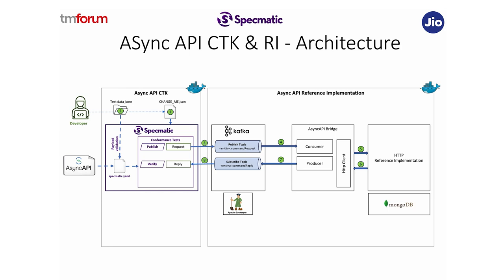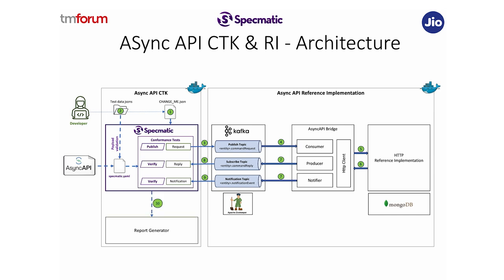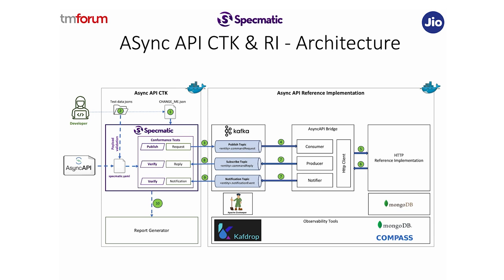Specmatic pulls the message from the command reply topic and verifies it against the Async API specification to make sure the reply matches the schema. The client is also capable of publishing notifications on the notification topic, which can also be verified by Specmatic. When all of this is done for all topics, we generate a report. While all of this is running, you may want observability into what is going on, so we've built a set of tools as part of the reference implementation for observability — for example, Kafdrop to see what's going on on Kafka. That is the high-level implementation of the async API CTK and RI.